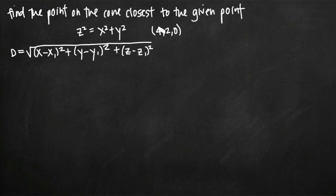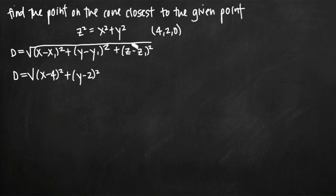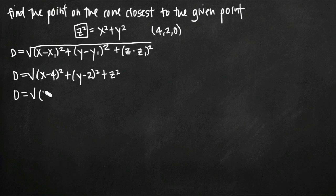Here's what that looks like. First, we plug in (4, 2, 0) and get d = √[(x − 4)² + (y − 2)² + z²]. Now notice we have a value for z² from the equation of the cone. We substitute x² + y² in for z² to put this distance equation in terms of two variables only. So distance is now √[(x − 4)² + (y − 2)² + x² + y²].